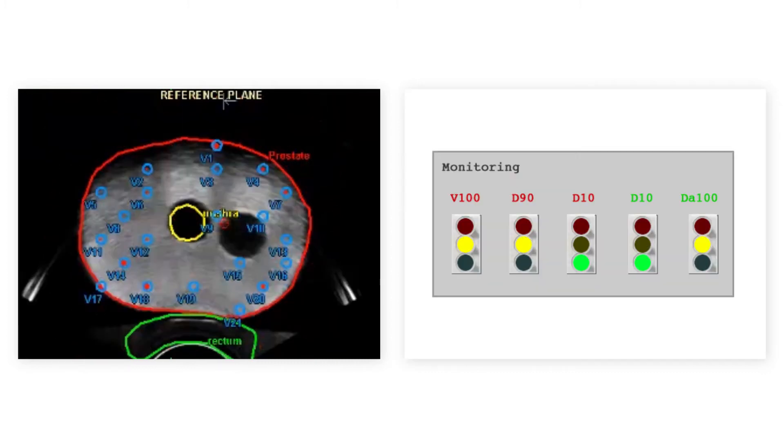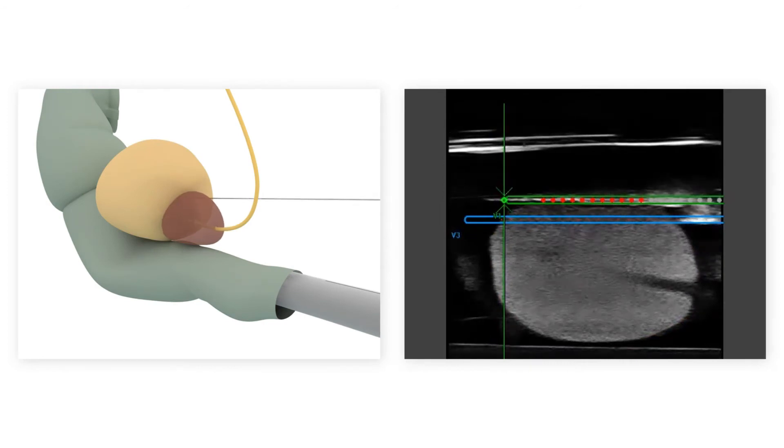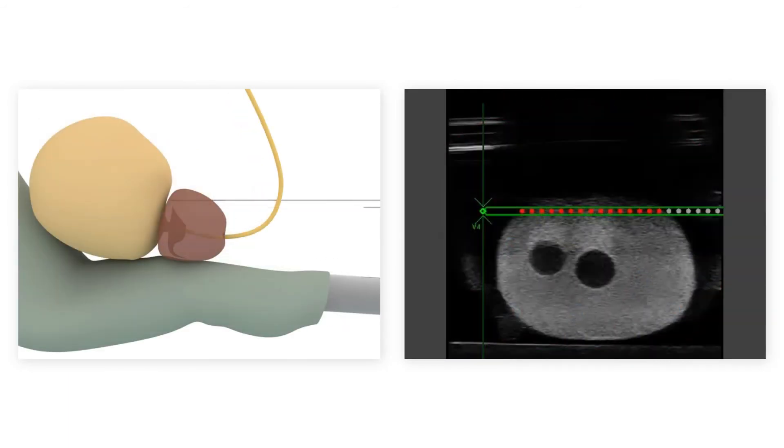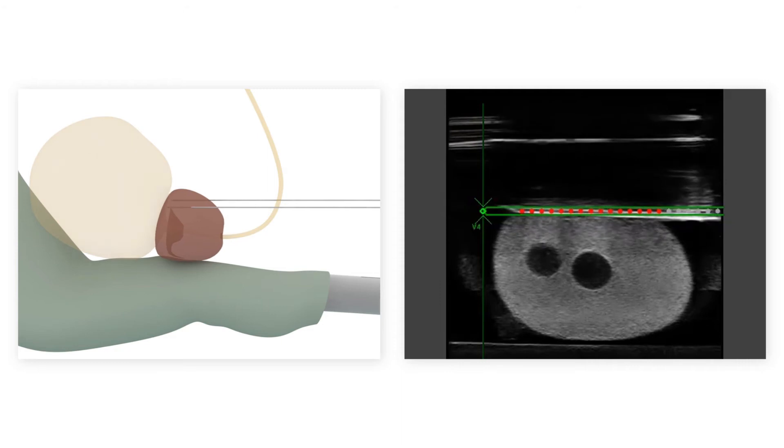With traffic lights for your presets, you can evaluate the planned dosimetry at a glance. The needle navigation technology helps you to insert the needle in the planned trajectory. Simply select the needle you want to insert and the probe will automatically be rotated to the correct plane. As a result, you can follow and guide the needle insertion live on the ultrasound image.